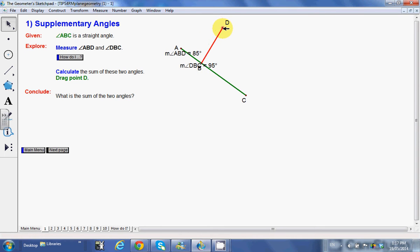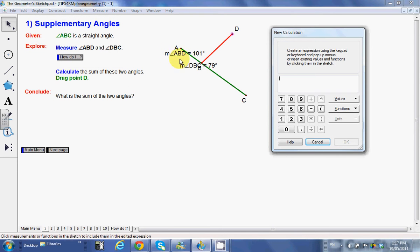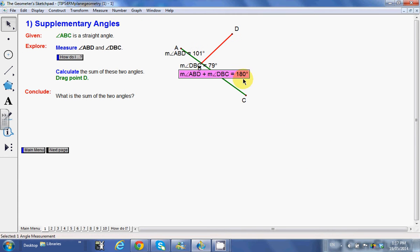I can actually even change that if I drag point B. Notice how they change, but what do you notice again about what they add up to? Something neat in GeoGebra that I can do is I can click on number to calculate, and just click on the first angle plus the second angle and hit okay, and it's going to show up here.